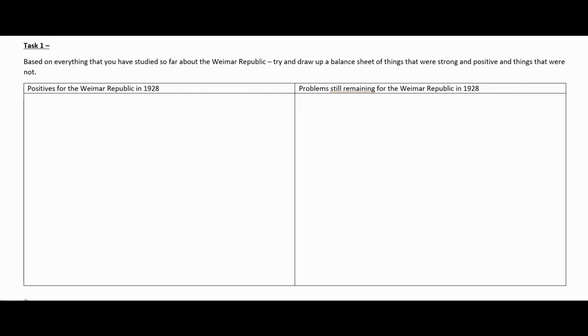The first task is for us to have a look at what the position was in the Weimar Republic in 1928. If you were living in the Weimar Republic in 1928, you would not be counting down the days waiting for the whole thing to collapse. So what we want to think about is what was positive for the Weimar Republic in this period, what was good, and what was negative — what was promising and what was not so promising at that specific snapshot in time in 1928.